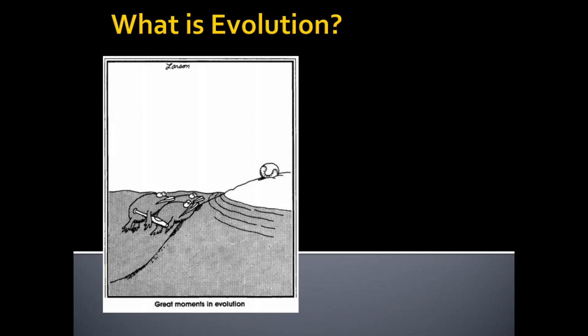When it comes down to it, there are really only two key components, and it's a very simple definition. We're going to keep this very simple, and then we'll spend the rest of the semester filling it out and talking about the details. Let me give you an example, ask if this is evolution, and then come back to those two key components.